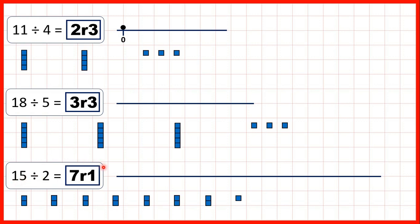Also, another rule is that the remainder has to be less than the divisor. So if we're dividing by 4, our remainder can only be 1, 2, or 3 — because if we had a remainder of 4, we'd be able to make another group. So if we're dividing by 5, our remainder can only be 1, 2, 3, or 4. And if we're dividing by 2 and we get a remainder, the remainder can only be 1, otherwise we'd be able to make another group.